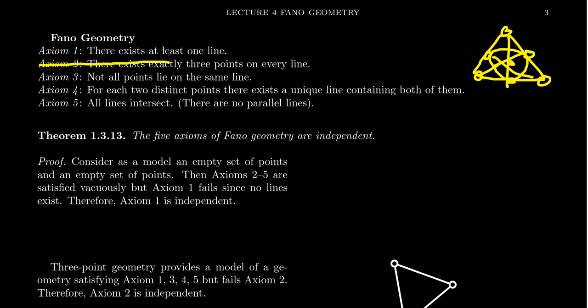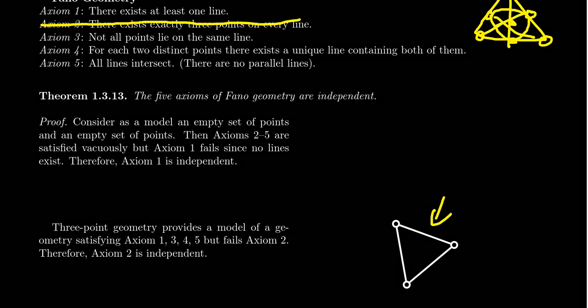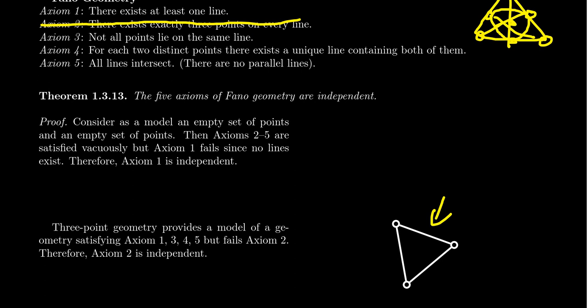What if we take out axiom two? Axiom two says there exists exactly three points on every line. I want you to convince yourself that three-point geometry is a model that satisfies Fano axioms one, three, four, and five, but negates Fano axiom two, because there does exist a line — there are three of them — not all points lie on the same line, between any two points there's exactly one line, and all lines intersect. But axiom two fails because in this situation all lines contain two points; not all lines have three points. So axiom two is independent of the other Fano axioms.